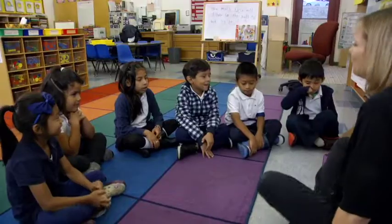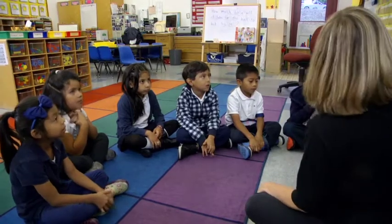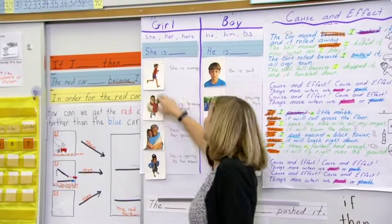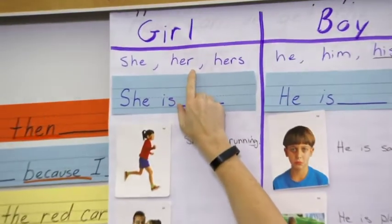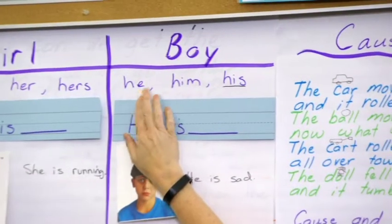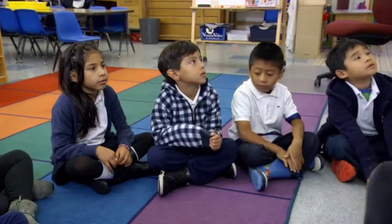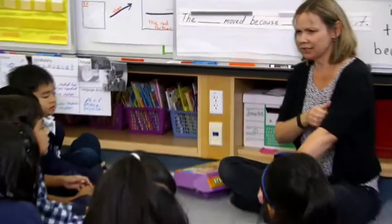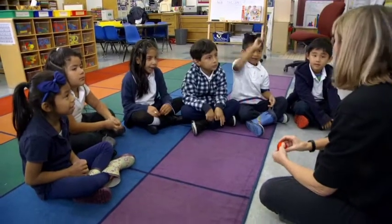We're going to play a little game where we talk about the language for boys and girls. Remember, we made this poster talking about boys and girls. So when we're talking about a girl, we're going to use the words: she, her, or hers. And when we talk about boys, we use these words: he, him, and his. Let's try to remember those words when we play our game with the ball. So I'm going to roll the ball.